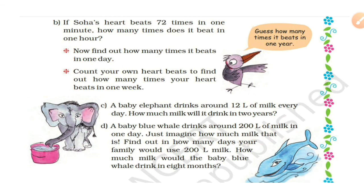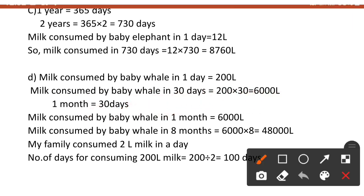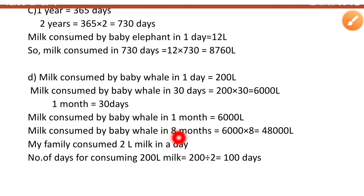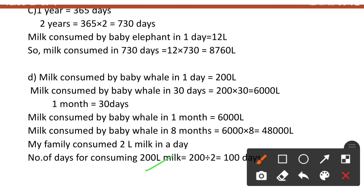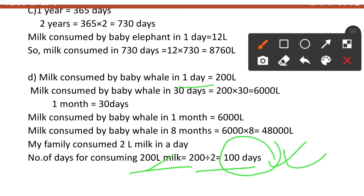Ek din ka diya hua hai to 8 months ka nikalna hai. Baby whale 1 din mein 200 liter consume karta hai. 1 month mein 30 days hote hain to 30 se multiply karenge — ek month mein 6,000 liters. 8 months mein 8 se multiply karenge: 48,000 liters milk. Aur suppose karein hamare yahan 2 liters aata ek din mein to 200 liters 2 se divide karenge: 100 days — yani 200 liters milk hum consume karenge 100 days mein.